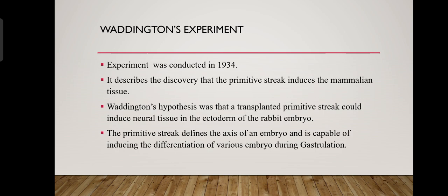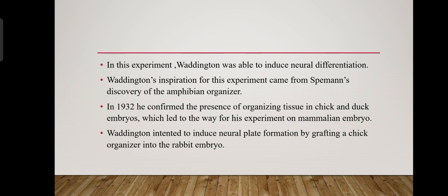Waddington's hypothesis was that a transplanted primitive streak could induce neural tissue in the ectoderm of a rabbit embryo. The primitive streak defines the axis of an embryo and is capable of inducing the differentiation of various embryonic structures during gastrulation. In this experiment, Waddington was able to induce neural differentiation.